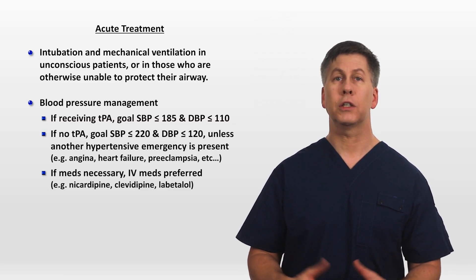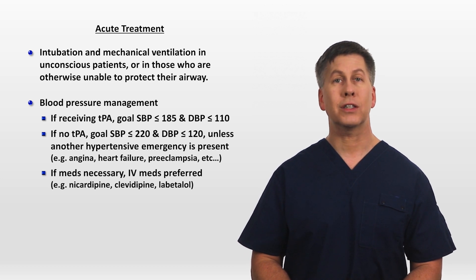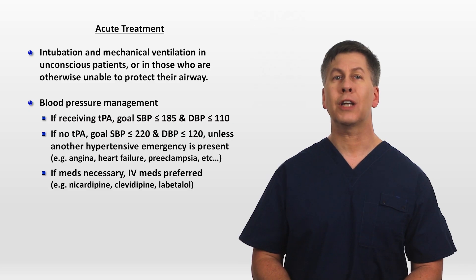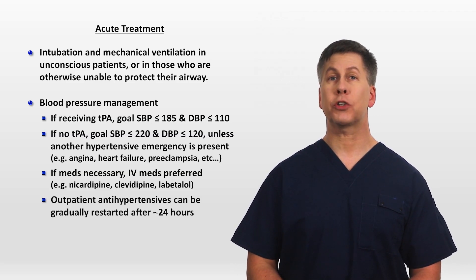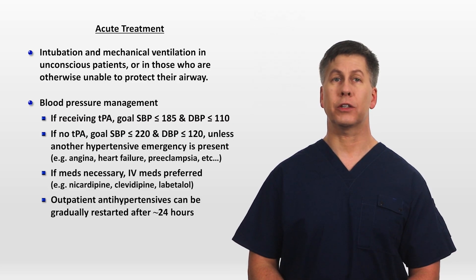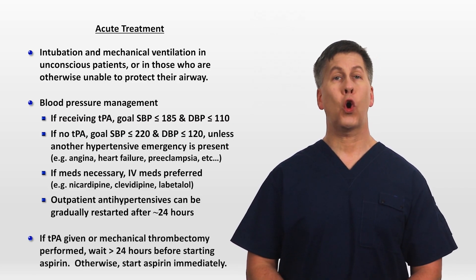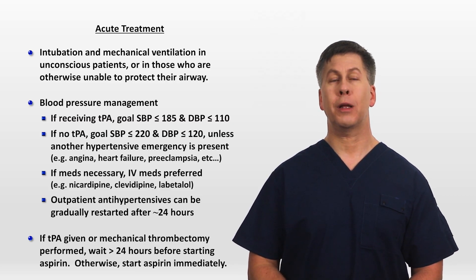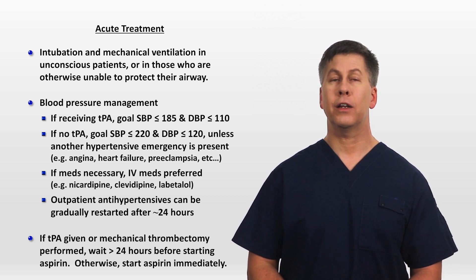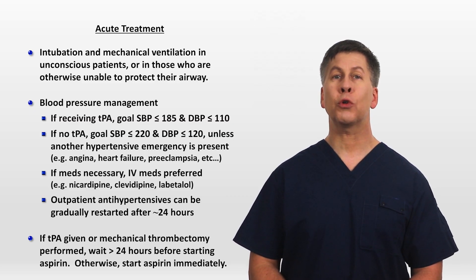In hypotensive patients, vasopressors to increase blood pressure can be rarely considered, but only if the patient is experiencing additional neurologic deficits attributed to the hypotension. In patients who are on outpatient antihypertensives before the stroke, these can be gently restarted after about 24 hours in most patients. If TPA was given or a mechanical thrombectomy performed, it's generally advised to wait at least 24 hours before starting aspirin; otherwise aspirin can be started immediately. The early use of anticoagulation such as heparin is only potentially indicated in unusual circumstances, and is generally avoided even in most cases of cardioembolic strokes.